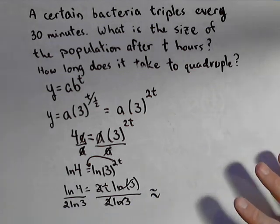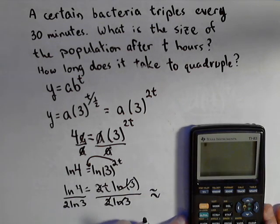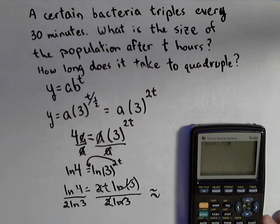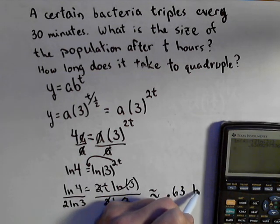And what I'm going to get for t, we're going to bring out the calculator. You do want to be a little careful when you put this one in. ln of four, close the parentheses, divided by, now I'm going to put the whole denominator in parentheses so I can put it in at once. ln of three, close both sets. And I've got that it's going to take about 63 hours.